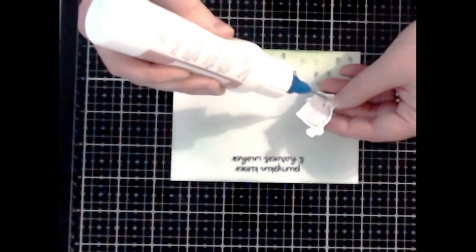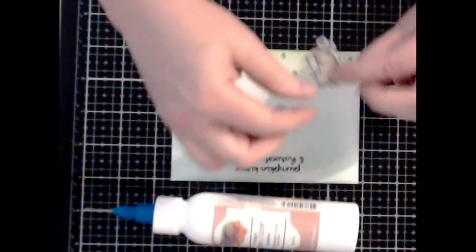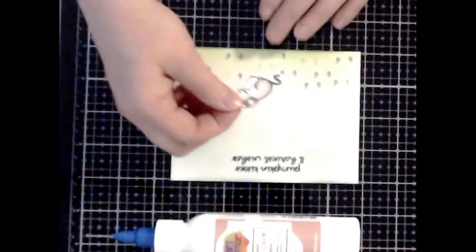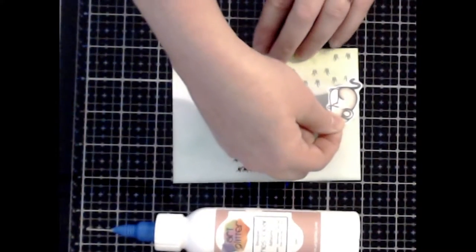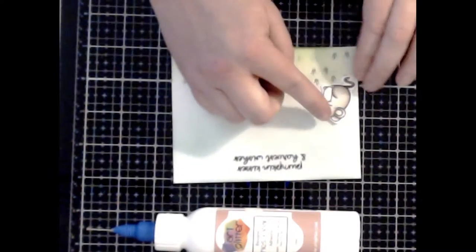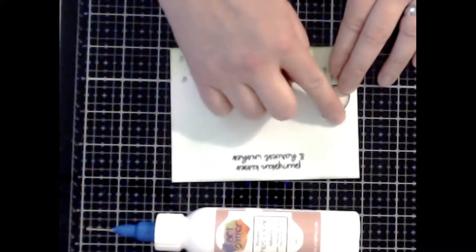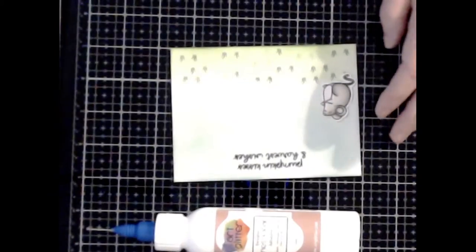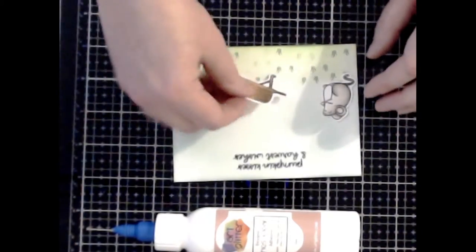I did kind of fussy cut all of the mice myself. However this stamp set I do believe comes with die cuts with it. I believe they were out of stock but keep checking back. I'm sure they'll be in the store soon.